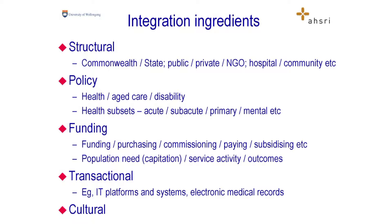I want to give you an overview about integration ingredients — there are basically five. Integration is at the level of the patient: how do we get this person navigated around a healthcare system? But it's also about the integration of healthcare systems. There are five things you can do. One is structural: Commonwealth/State, public, private, NGO, hospital, community, etc. We've got some policy integration to do — health, aged care, disability. Scotland is integrating; we are disintegrating those three. We have health subsets where people in mental health continually say they're not part of the rest of the health system. There are all sorts of funding mechanisms — purchasing, commissioning, paying, subsidising — and the evidence on using funding levers to drive integration is mostly pretty weak.